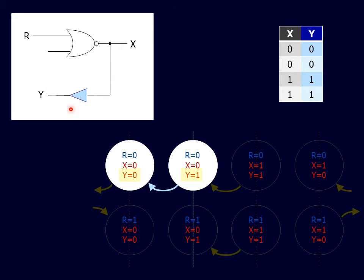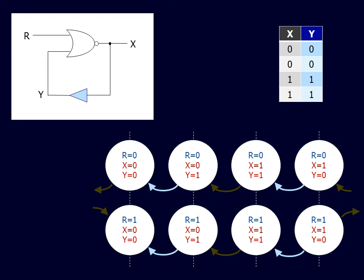We then do the same for the buffer. In the example shown, the buffer forces the Y value to transit from Y is equal to 1 to Y is equal to 0, after a propagation delay in the buffer. We thus fill in all transitions forced by the buffer.